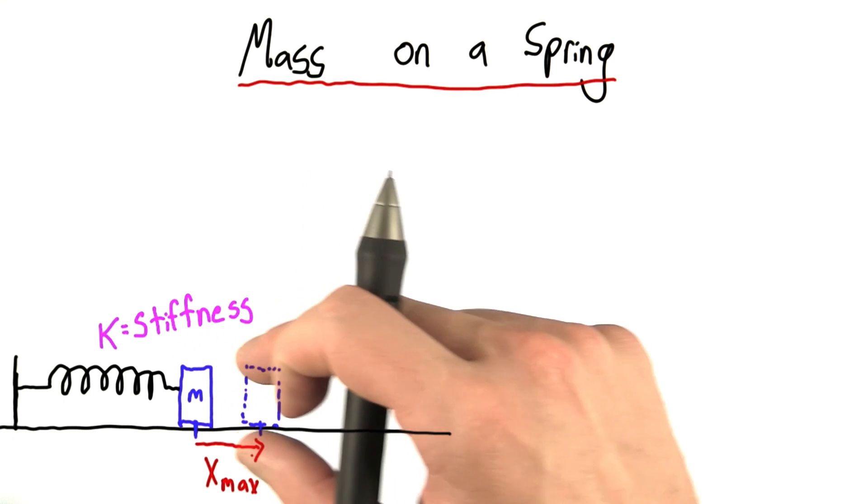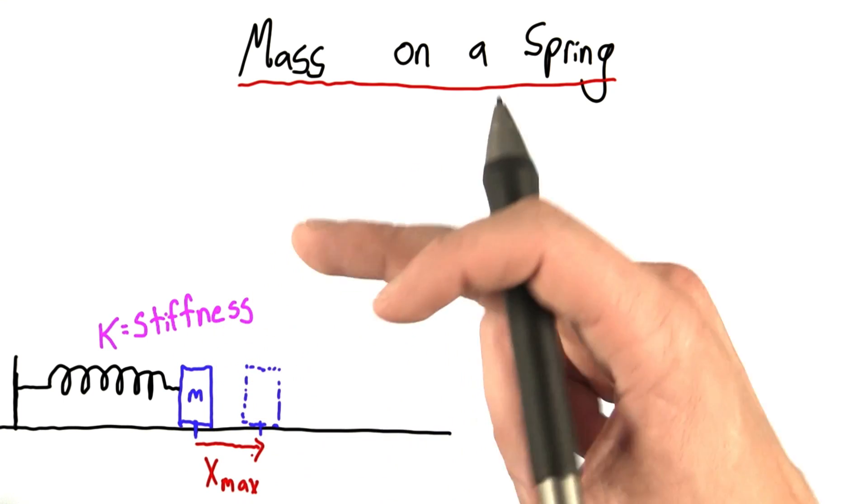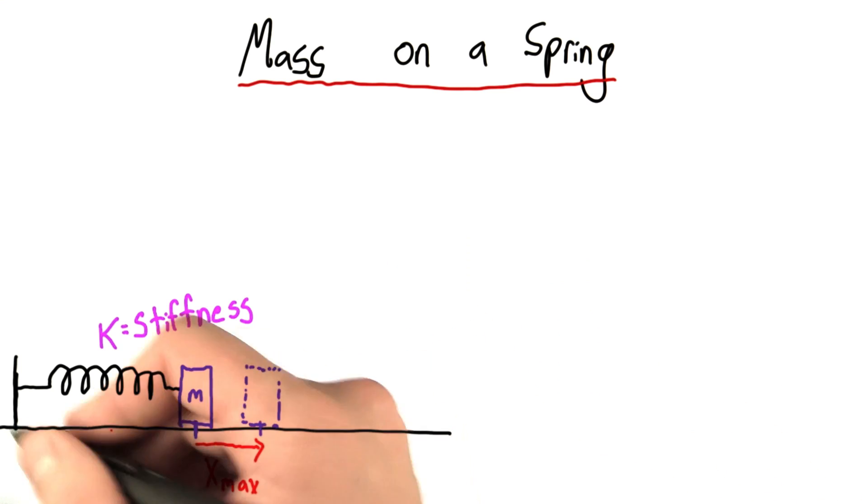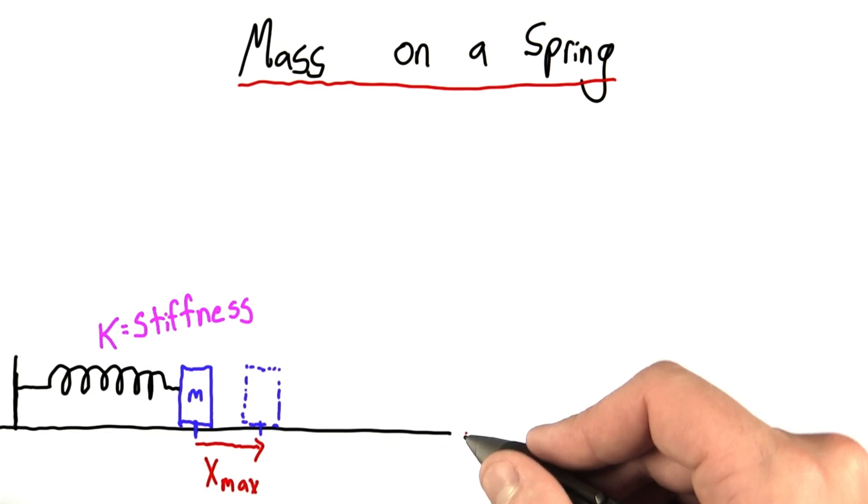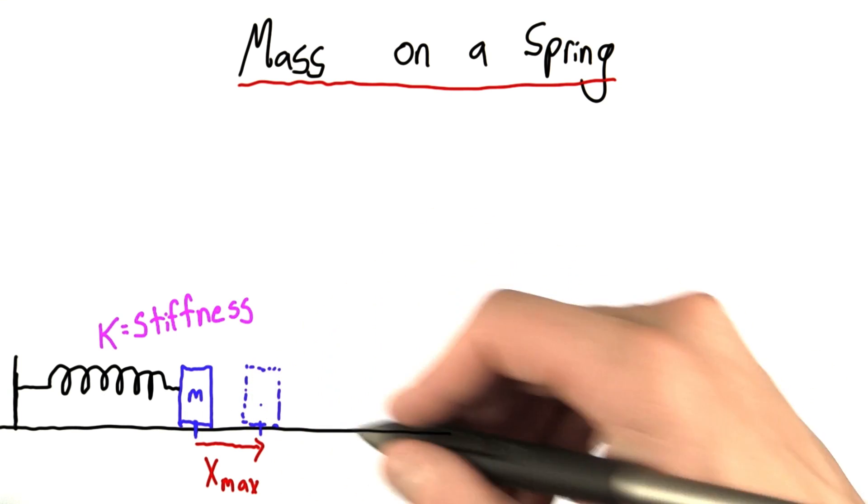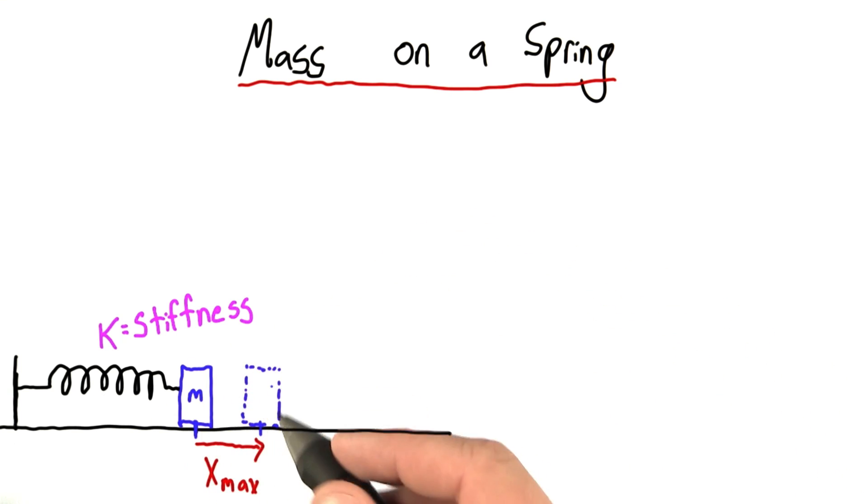Now if I pull this mass back to x max and release, what's going to happen is it's going to undergo a series of oscillations. In fact, if we assume that this surface is frictionless, it's going to oscillate forever. Of course that would never happen in real life, but let's talk idealized here.